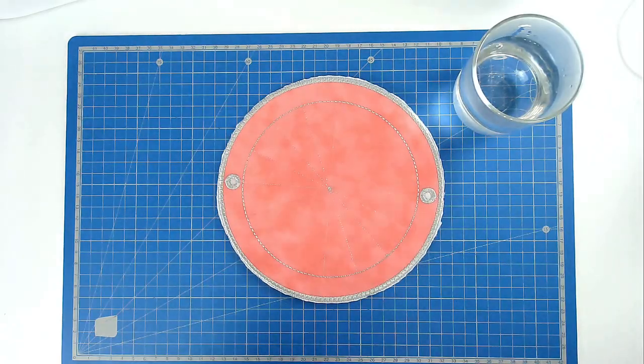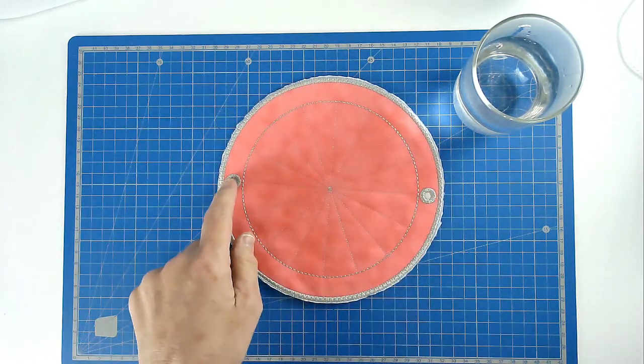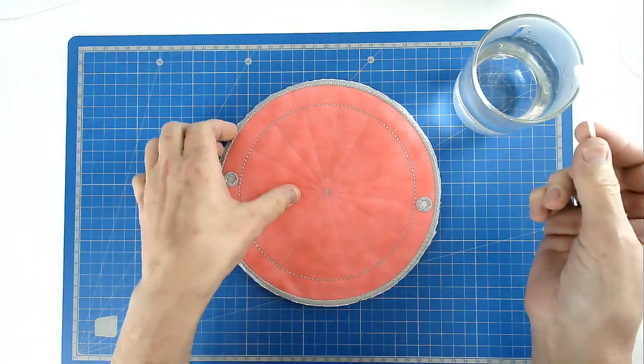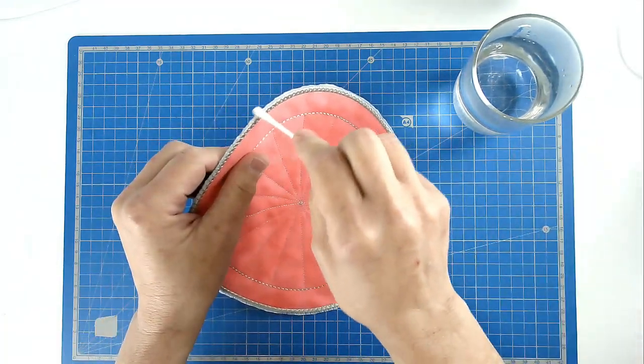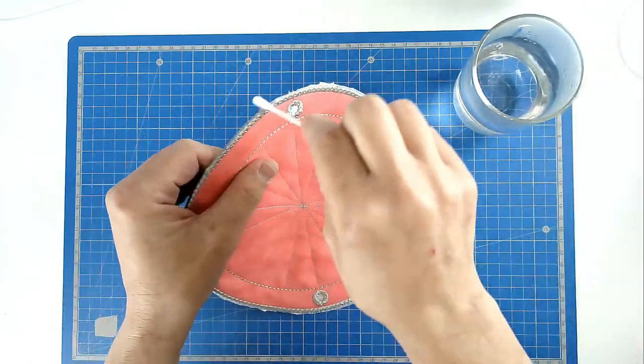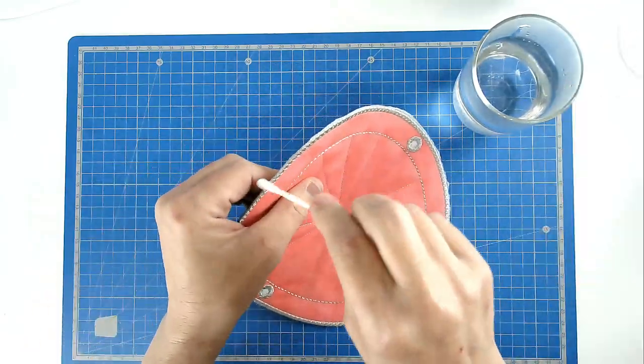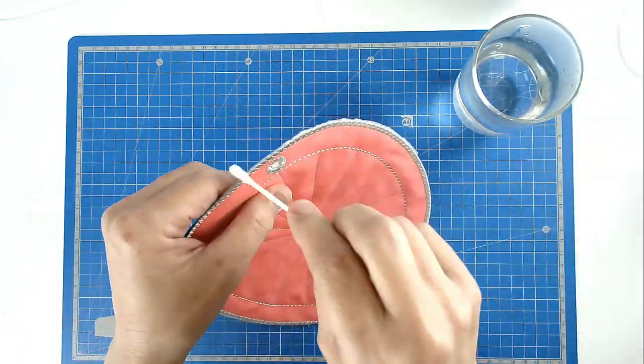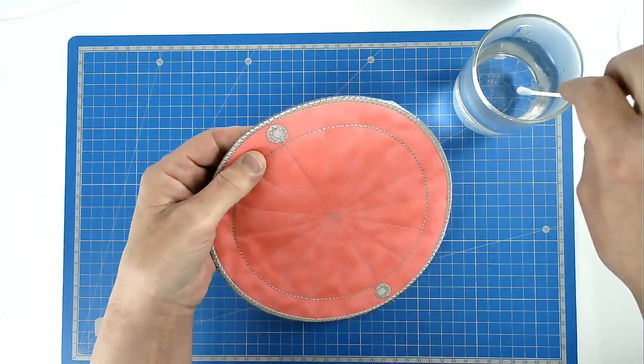We're now going to remove the excess stabilizer from around the edge and from the eyelets. So take a cotton bud or brush, dip it in warm water, and just rub it around the edge. And now we're going to dissolve the eyelets.